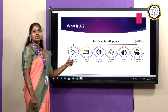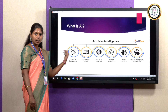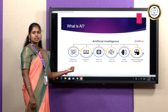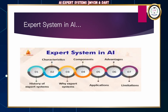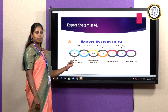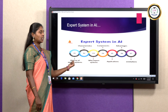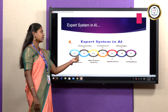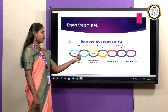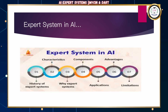In expert system AI, what we are going to see is: how the expert system has emerged in artificial intelligence, what are the characteristics and what is the need — why we are going for the expert system — what are the components of the expert system, applications, advantages and disadvantages. These are the major factors we are going to see in today's session.